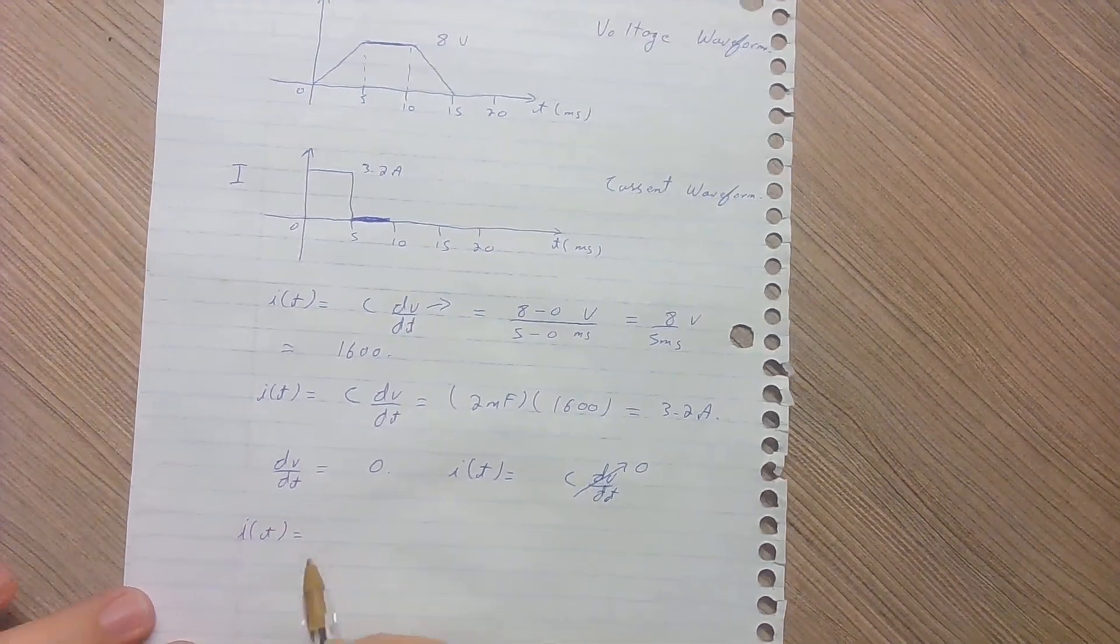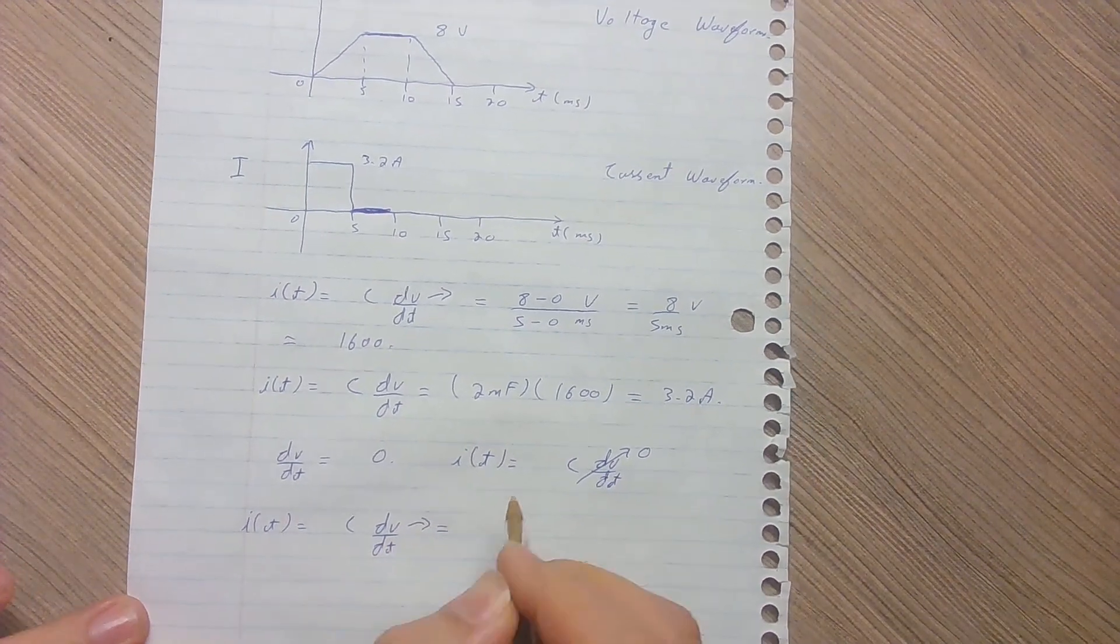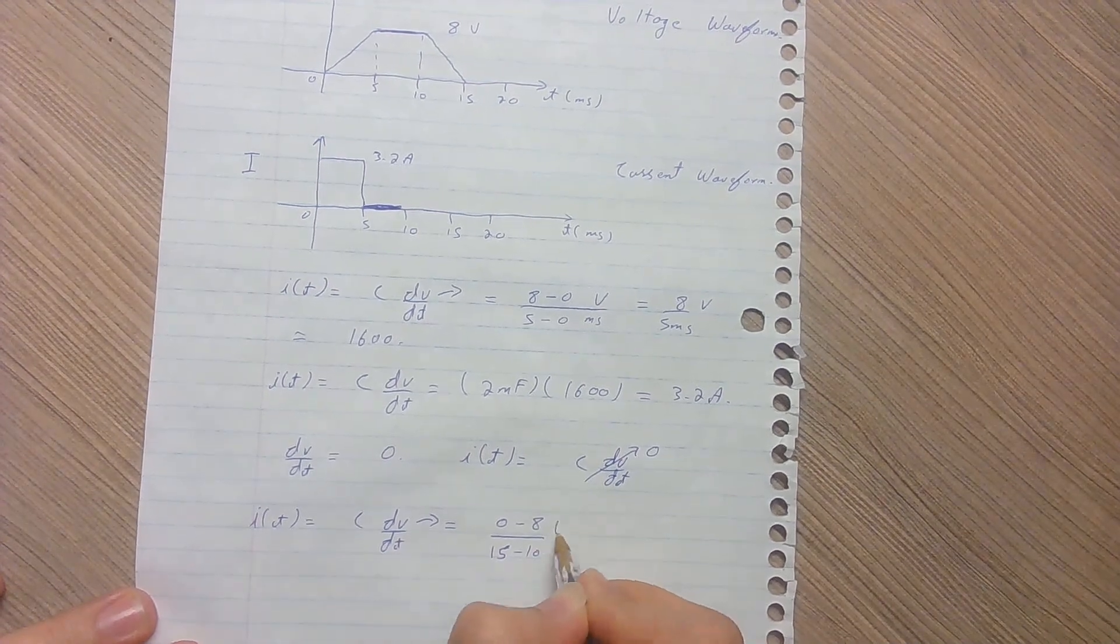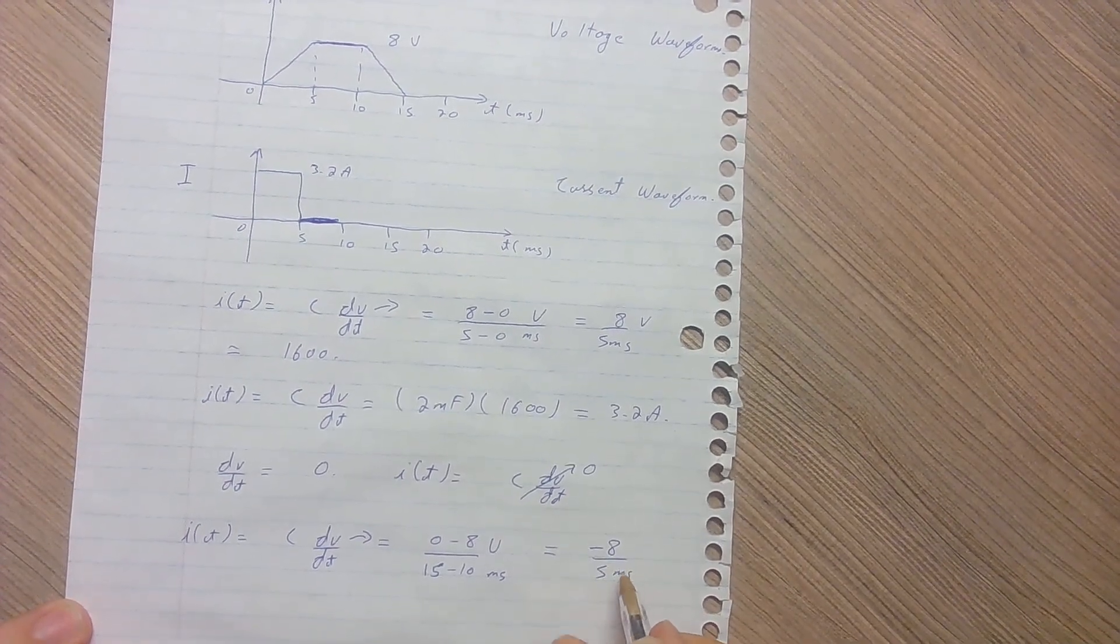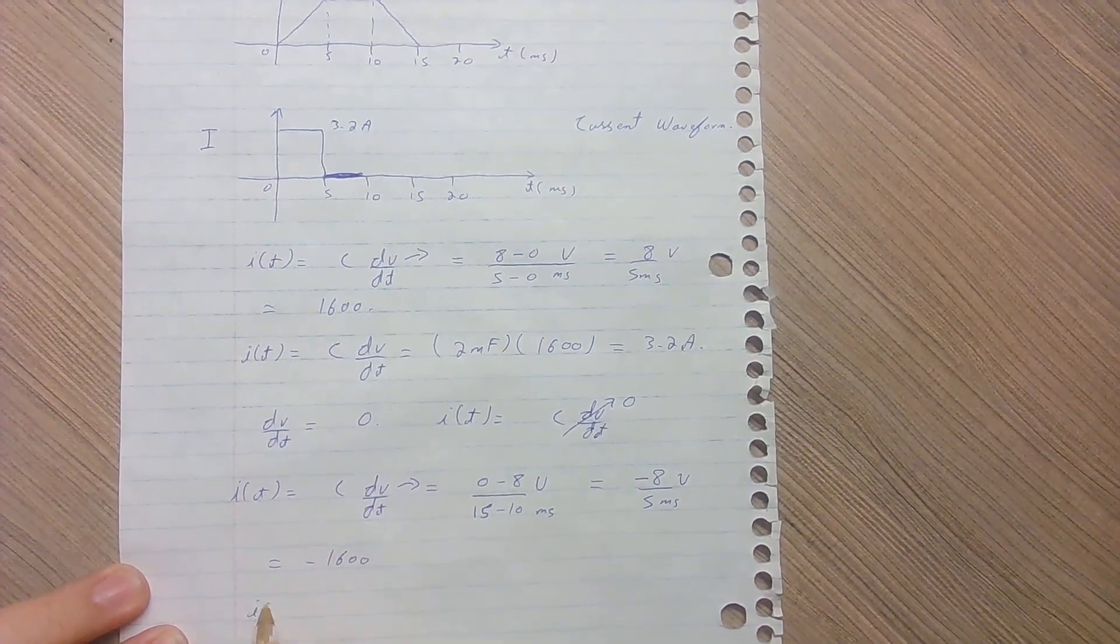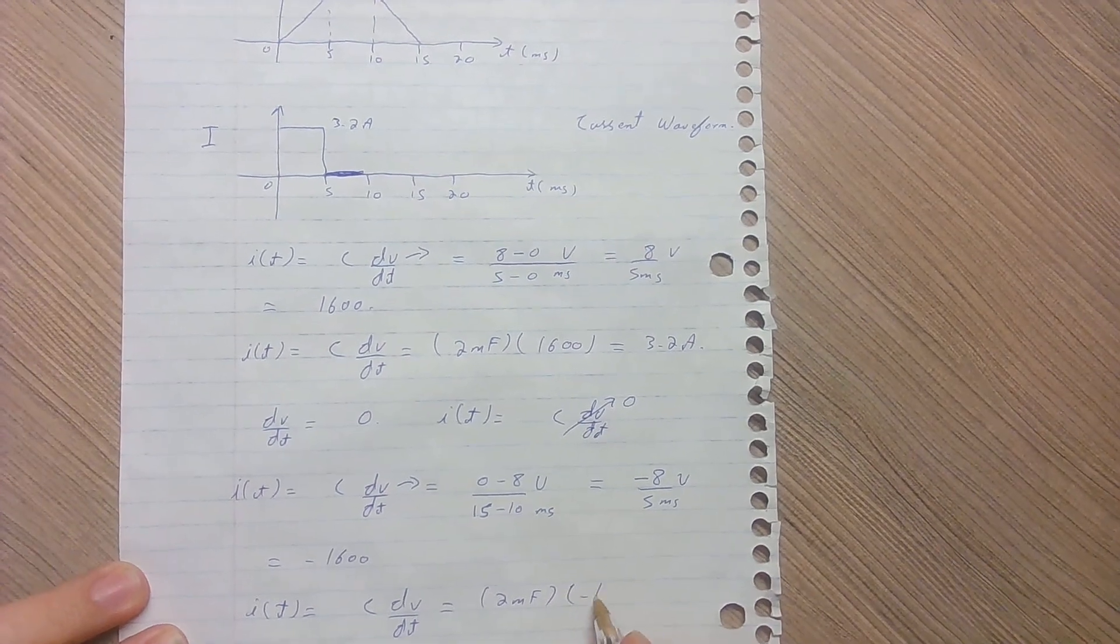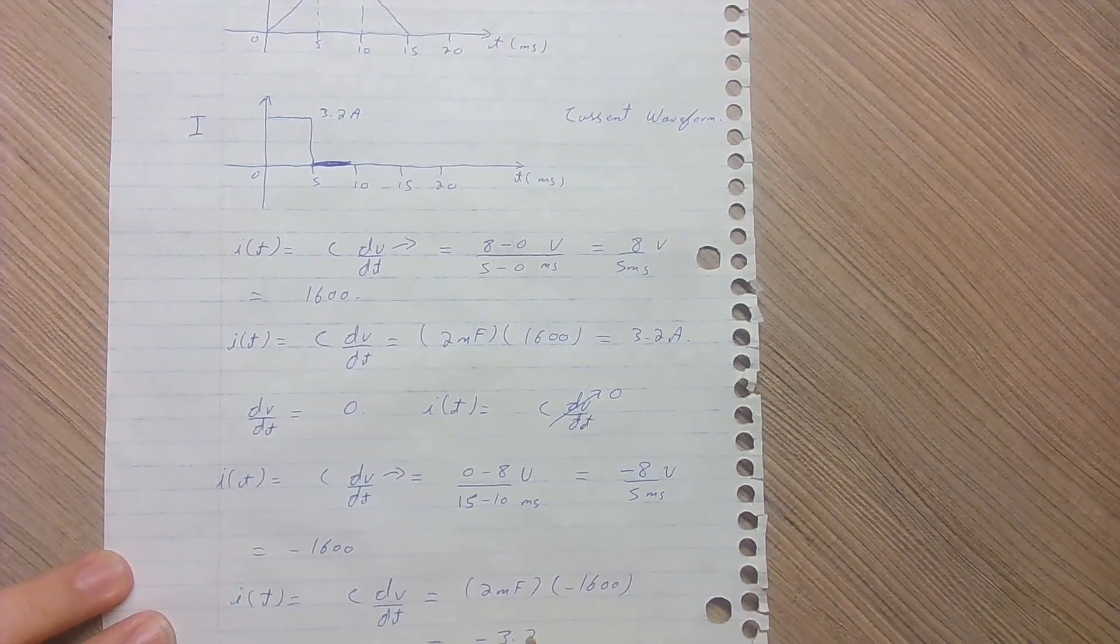I(t), which is C times dv/dt—in this case the change in voltage is 0 minus 8 divided by 15 minus 10 milliseconds. So we get negative 8 over 5 milliseconds, which equals minus 1600. And the current will be C times dv/dt, which equals 2 millifarad times the change in voltage over this time period, which equals minus 3.2 amperes.